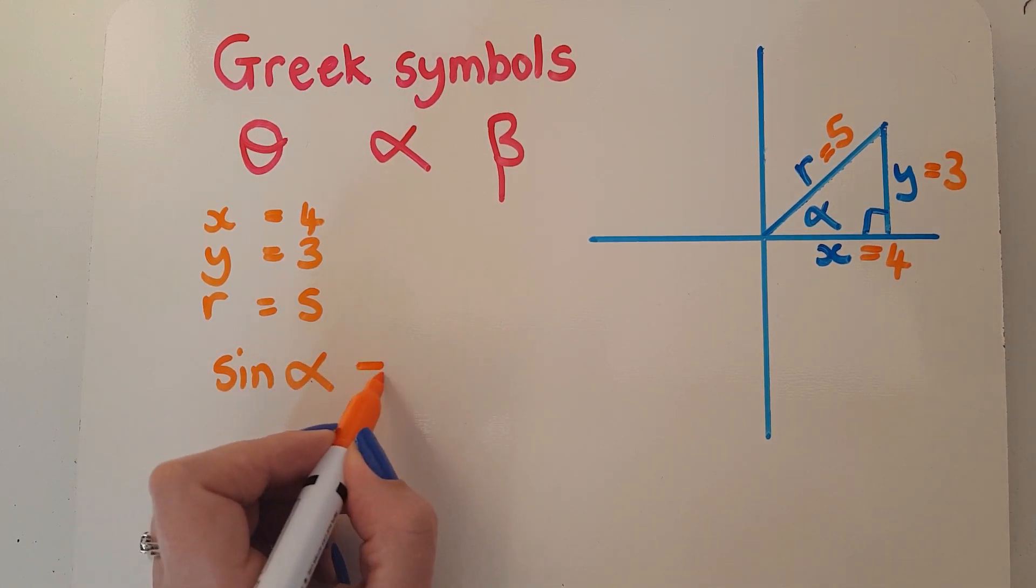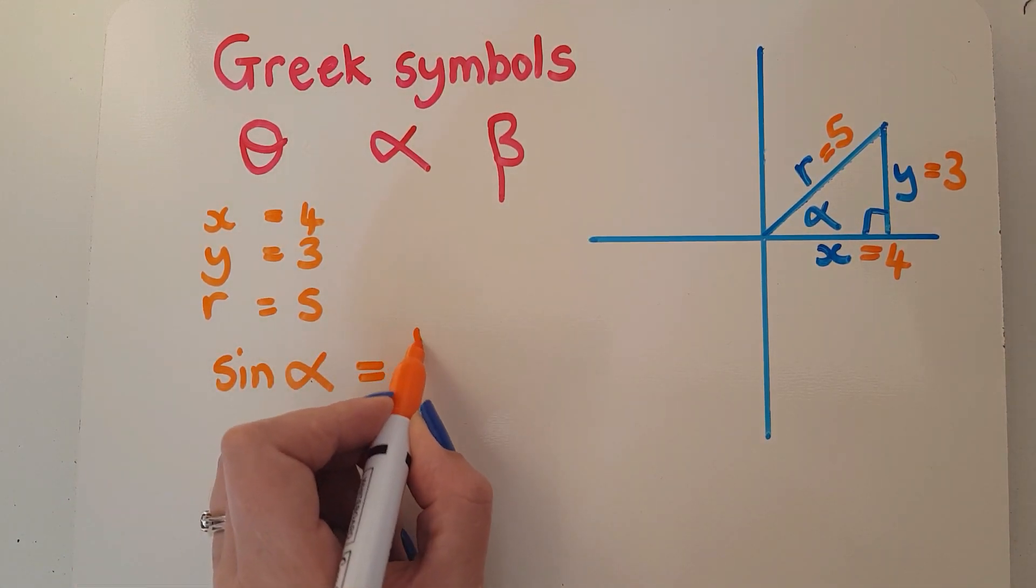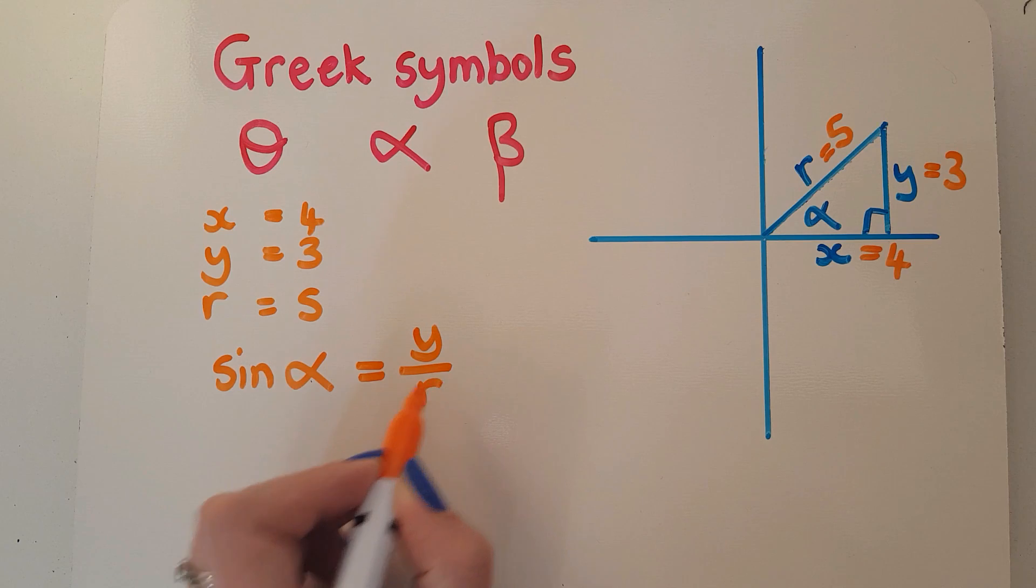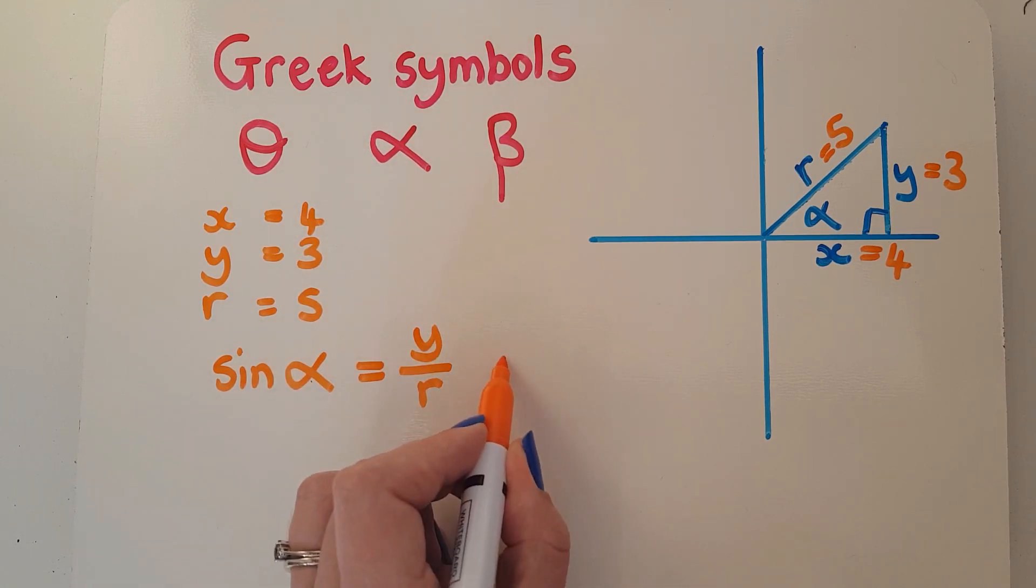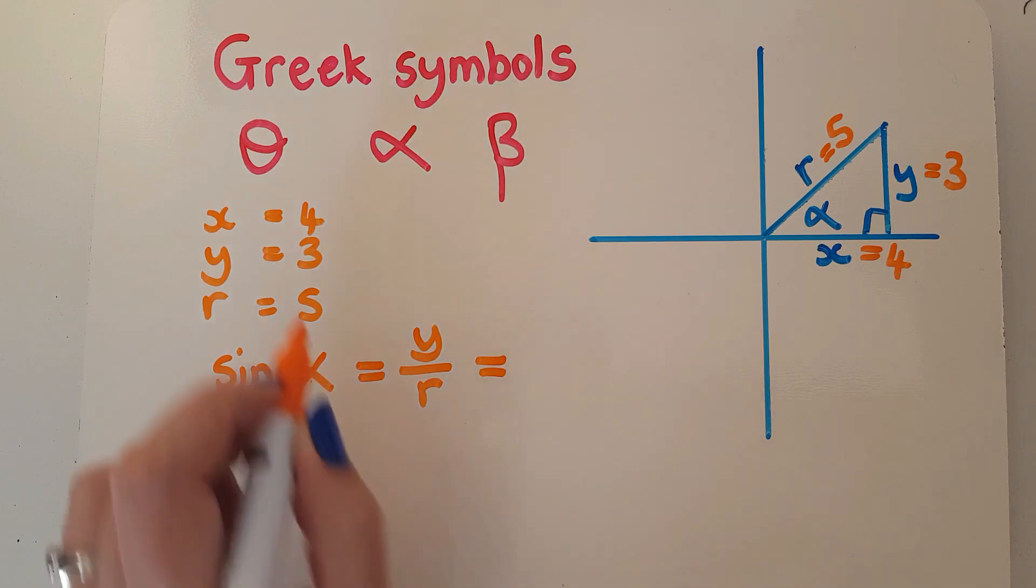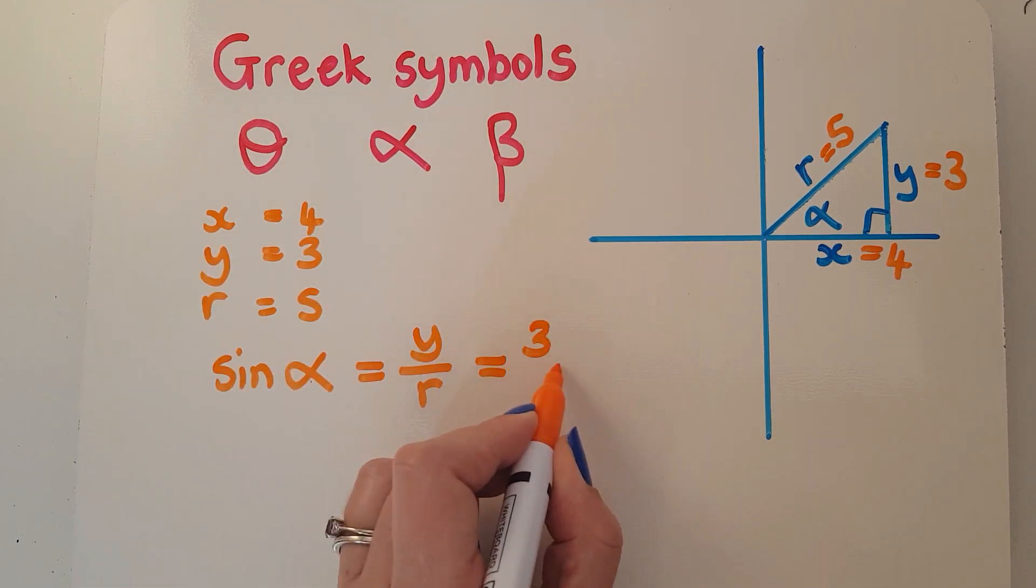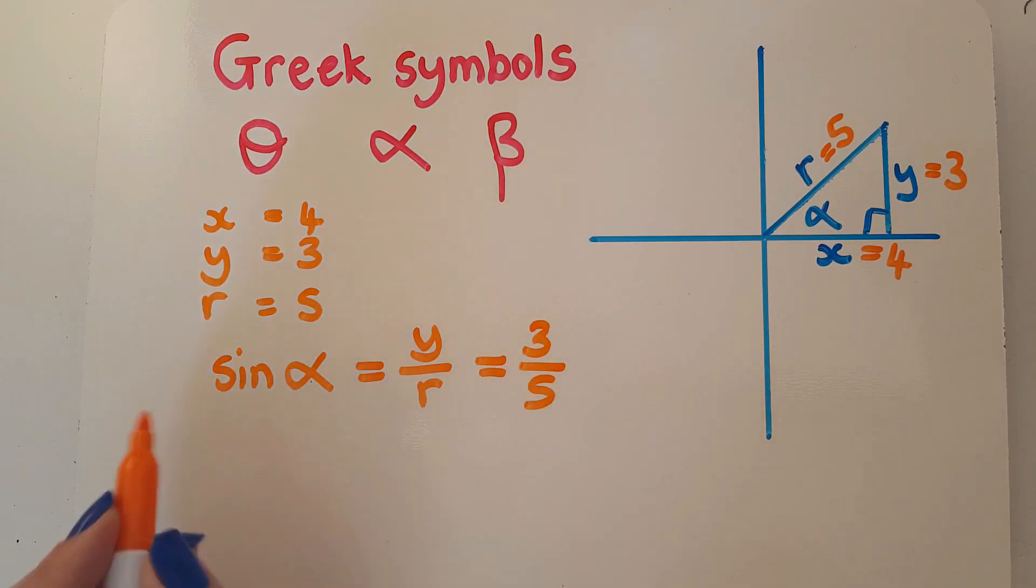We've said that sin of the angle is y over r. The sin of the angle is the name of something you do to that angle that'll give you this particular thing, the y over the r. The y I've got is 3, the r is 5, so sin α = 3/5. That is just a name given to what is done to the angle to get that.